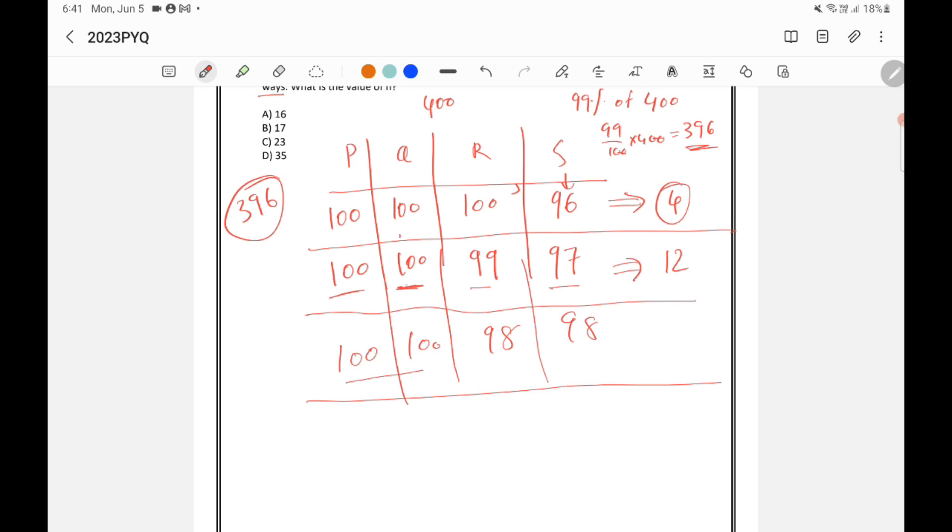So here actually 100 is coming 2 times and 98 is also coming 2 times. So how many possibilities will be there? 4 factorial divided by 2 factorial into 2 factorial. So if you do this, you will get 6. So total 6 possibilities are there in this arrangement.